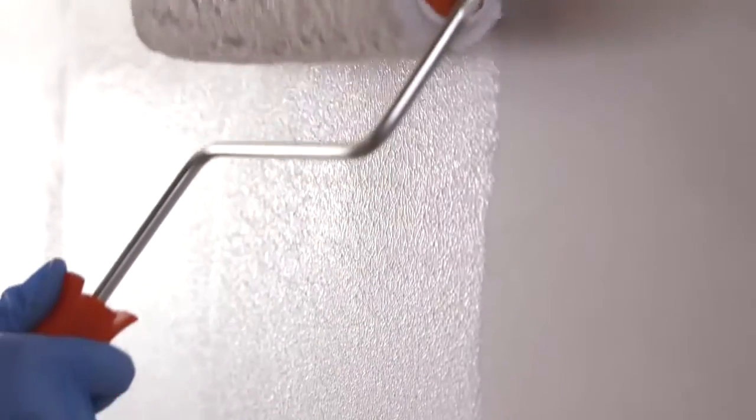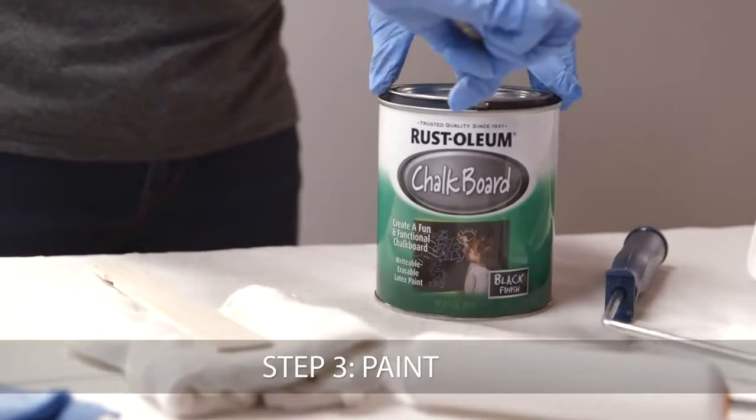If a primer is used, be sure to follow the manufacturer's instructions. For bare wood, sand lightly to smooth out the surface after priming. Now you're ready to paint.